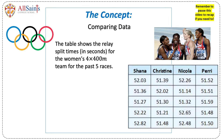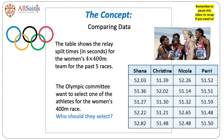Below you are given a table of results for the relay times for the women's 4x400m race for the past 5 races. Imagine you are on the Olympics committee and you wanted to select someone for the 400m race. You can see that a set of numbers can be difficult to interpret and compare, so it is much easier to summarise the data using a single value. This allows us to gain an overview of what the data is showing.